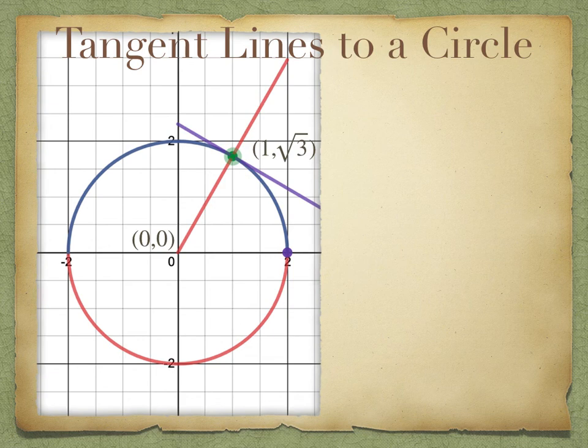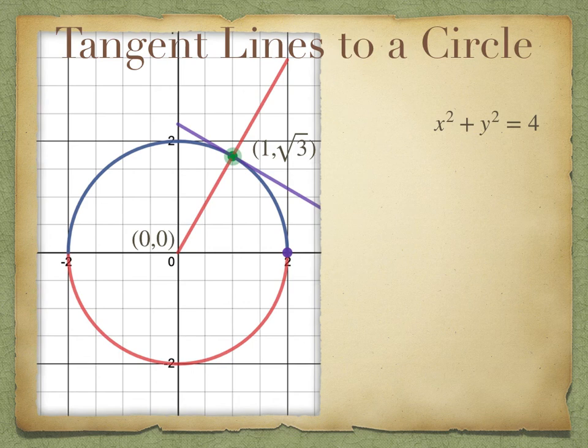How can we find the formula of the purple line? First let's start with the formula of this circle, which is x squared plus y squared equals 4, because (0, 0) is the center and the radius is 2. Because the green point is on the upper part of the circle, we can figure out the formula of the blue segment, which is y equals square root of (4 minus x squared). Take the positive part.